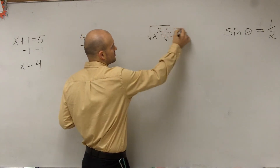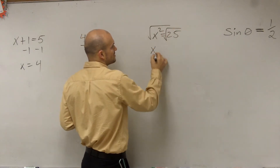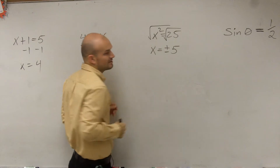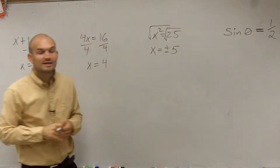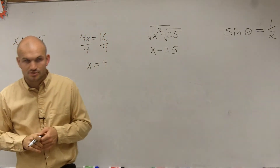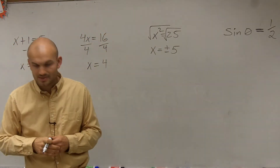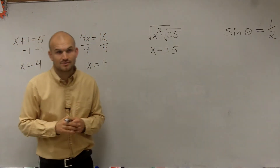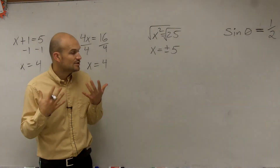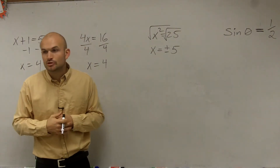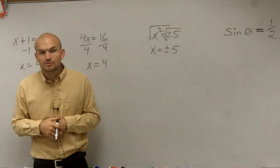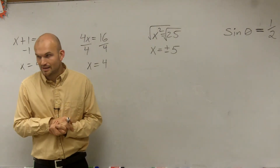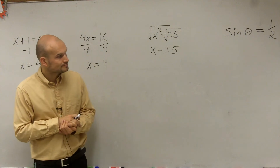You square root both sides and we get x equals plus or minus 5. Because when taking the square root, you have to make sure you include both solutions — the positive 5 and the negative 5.